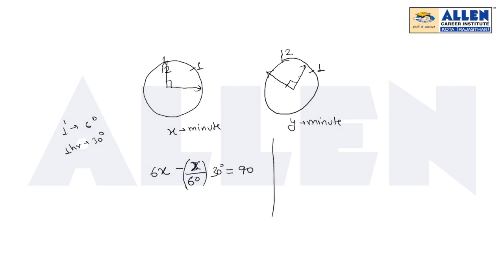Similarly, in the second case after y minutes, the minute hand travels 6y degrees. And the hour hand travels y upon 60 times 30 degrees. This is 270 degrees. If you see, it will be 270 degrees.